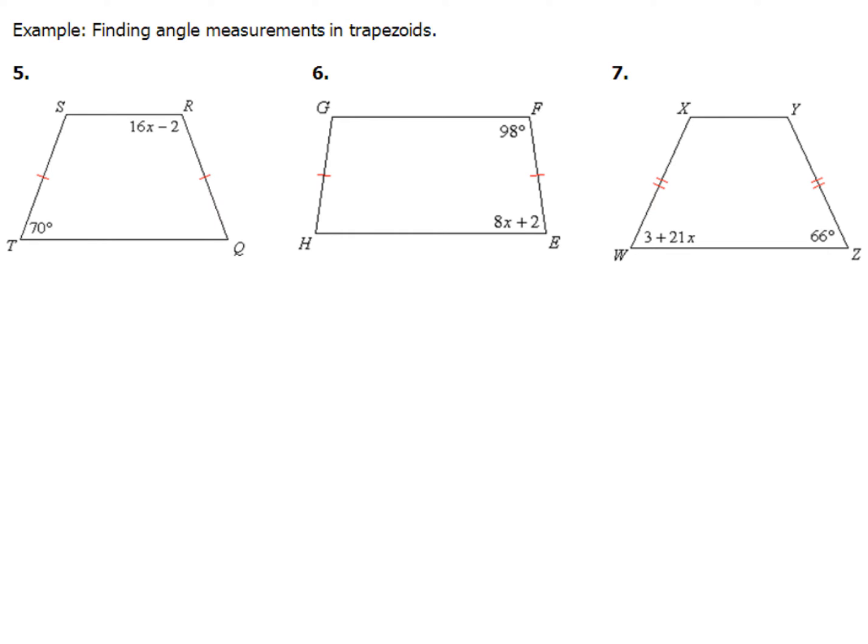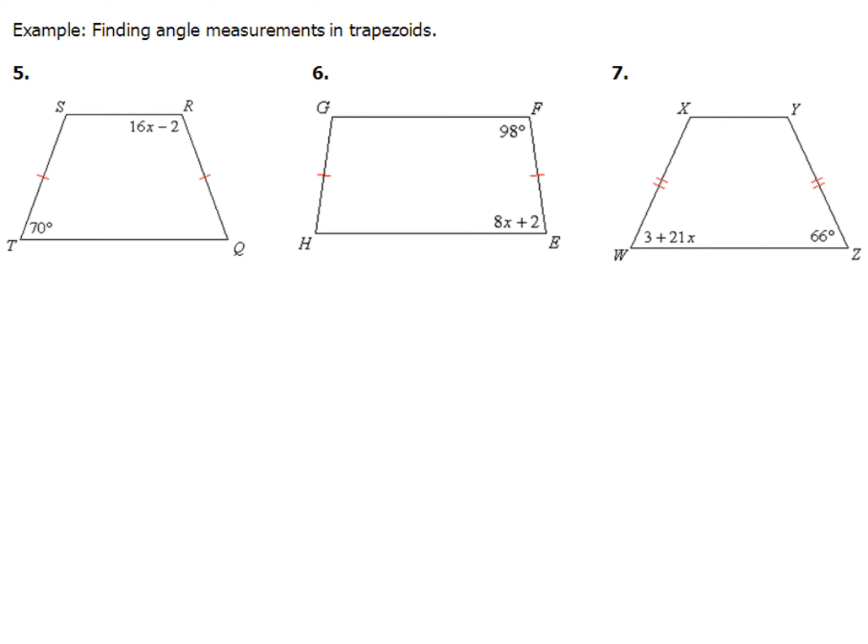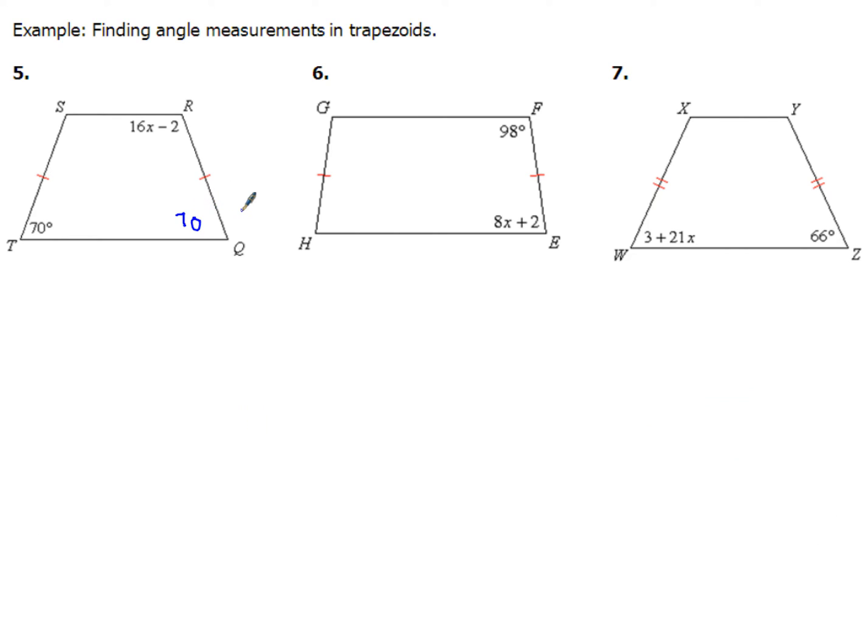And I can tell from my diagram that I'm dealing with an isosceles trapezoid. So check out example 5 here. We've got this base angle here of 70, which means my other base angle over here, that's also 70. Now one of the characteristics of trapezoids, remember bases are parallel.